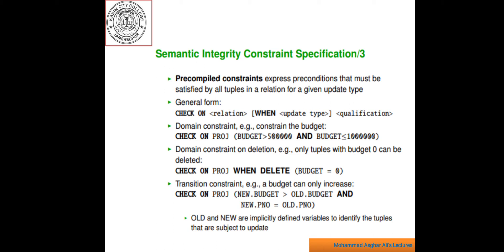Pre-compiled constraint can be expressed with the SQL check statement enriched with the ability to specify the update type. The syntax of the check statement is check on relation name when update type qualification over relation name. This is the syntax of the check constraint.